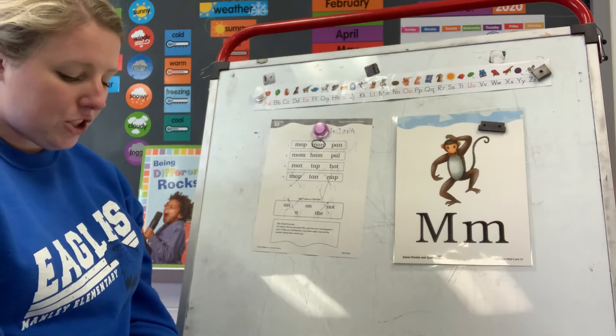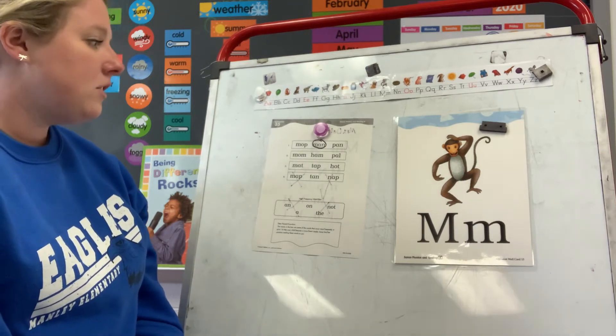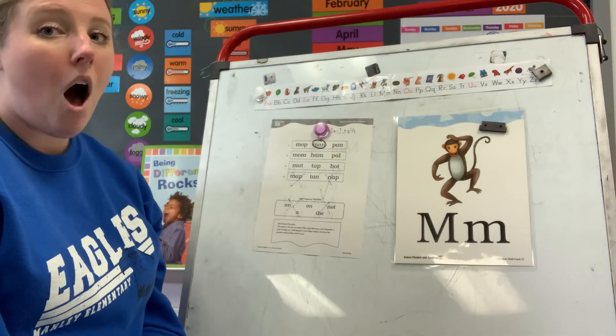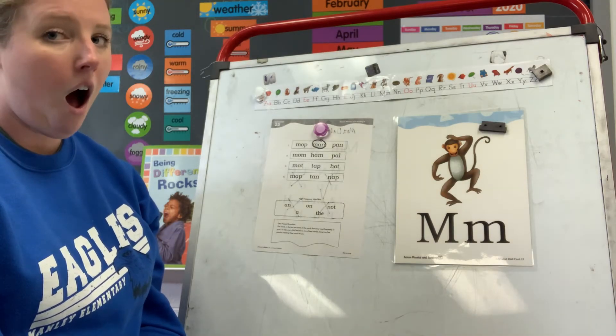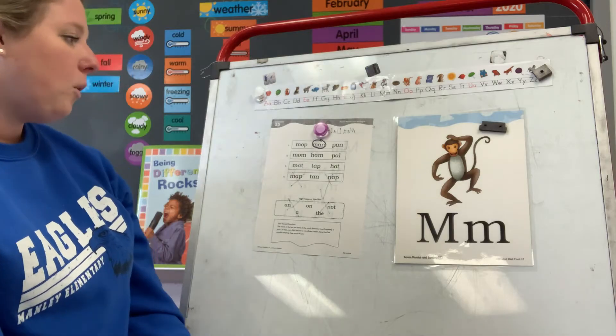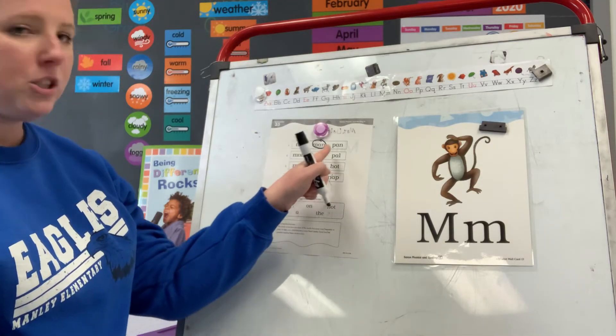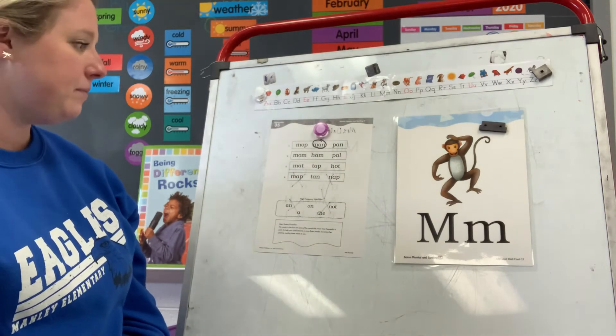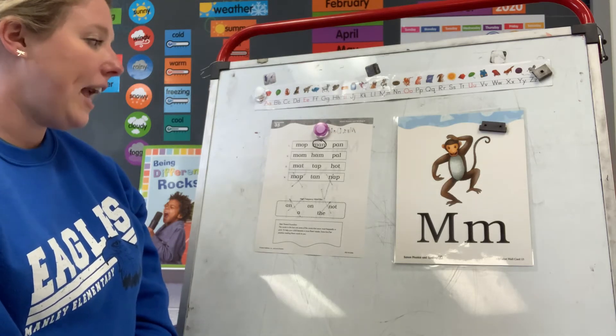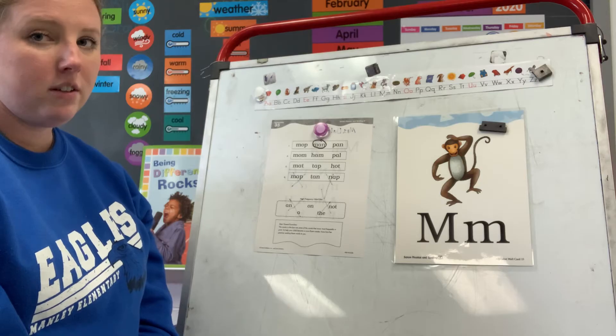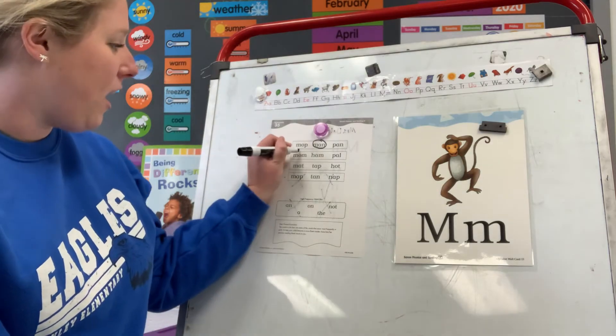Look at number two. Circle the word mom. Break those sounds apart. M-o-m. Which one of those words by number two is mom? Is it the first word, the second word, or the third word? The first word, circle.